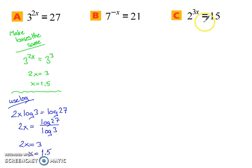For b and c, you can't make 21 have a base of 7 and have it be nice. Same with c. You can't make 15 have a base of 2 and have a nice exponent in the end. So therefore, you're going to have to use the log method for both of these. If you didn't, try that now. When you return, the answer will be revealed below.